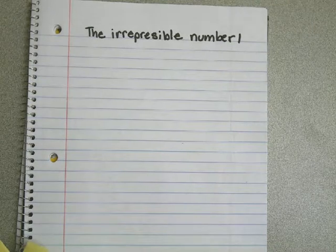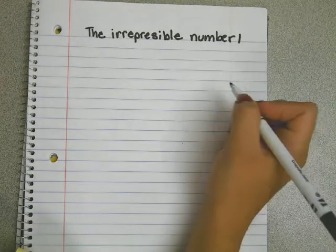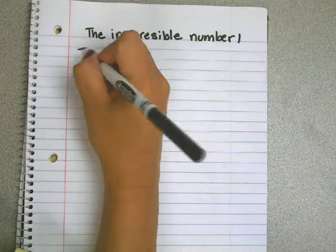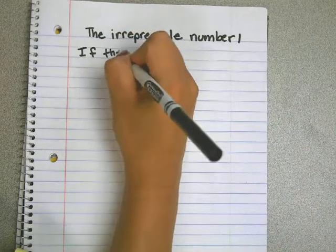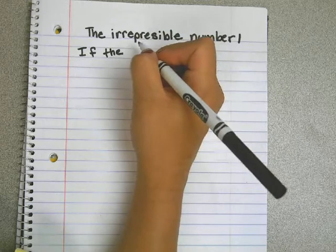All right, so the way this one works is you're going to follow two rules. The first rule: if the number is odd, then multiply by three and add one.